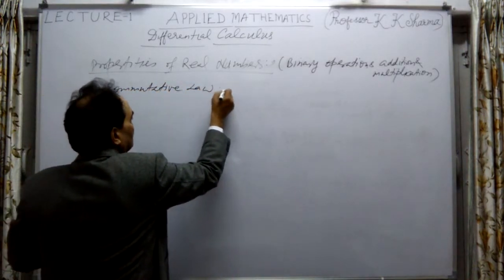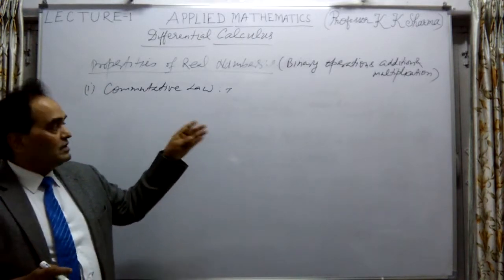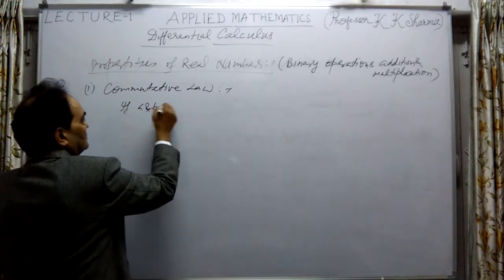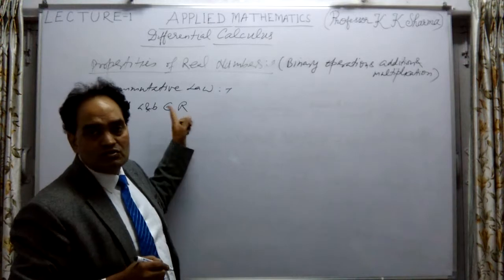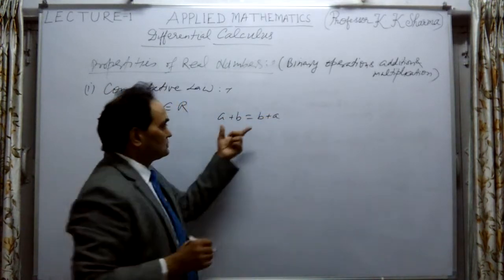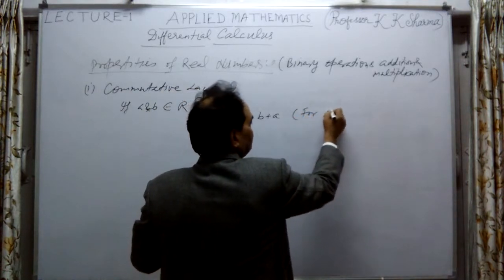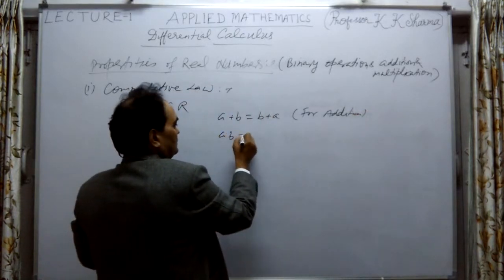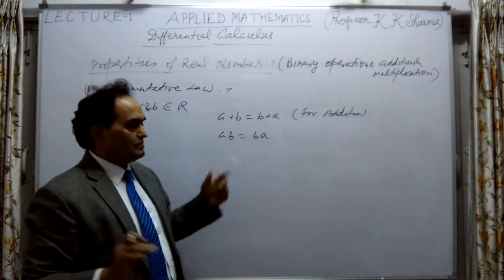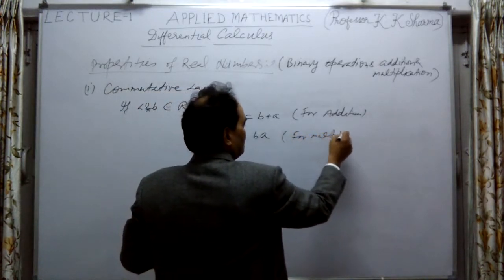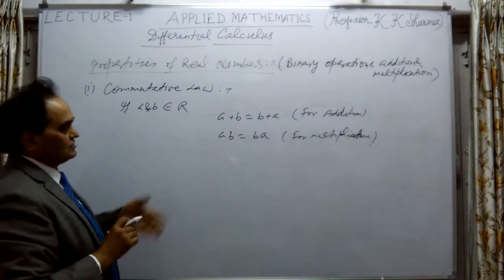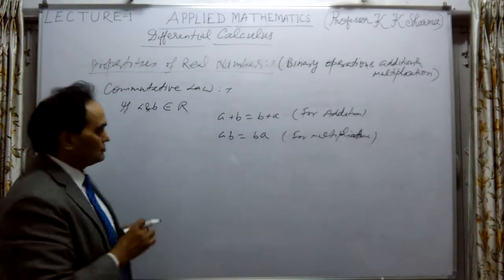The first property is the commutative law. If A and B belong to R — that means A and B are real numbers — then A + B = B + A. This is the commutative law for addition. And A × B = B × A, this is for multiplication. If we change the order of the numbers and add or multiply them, the result is the same.